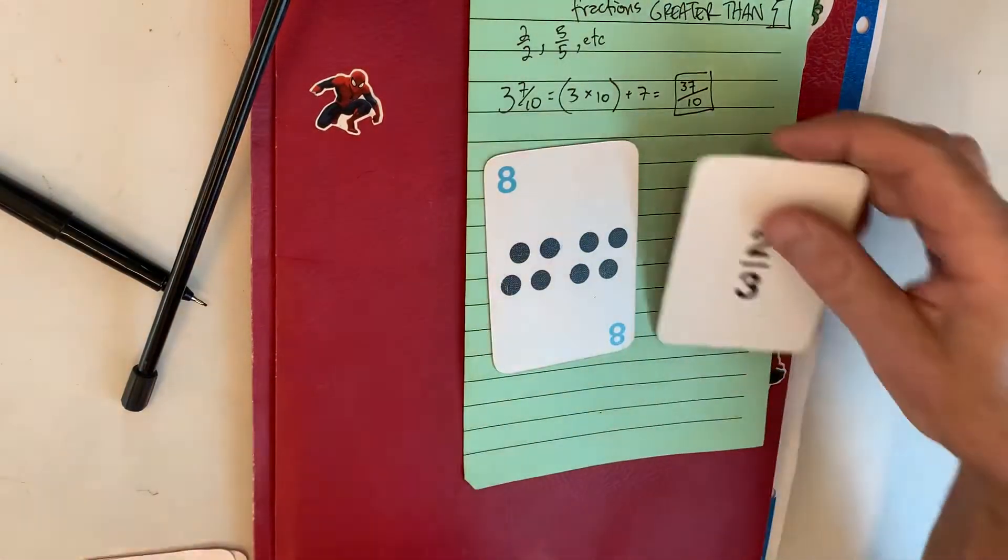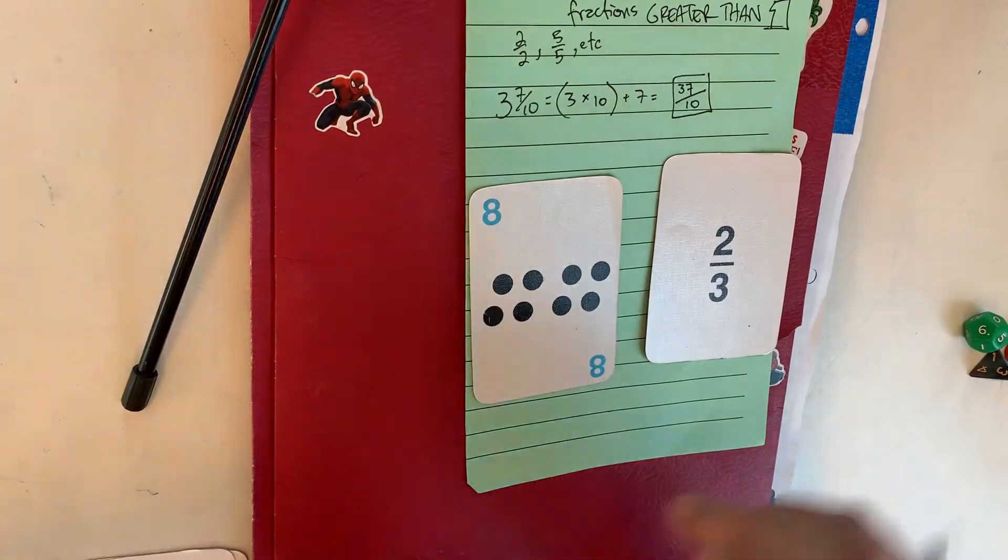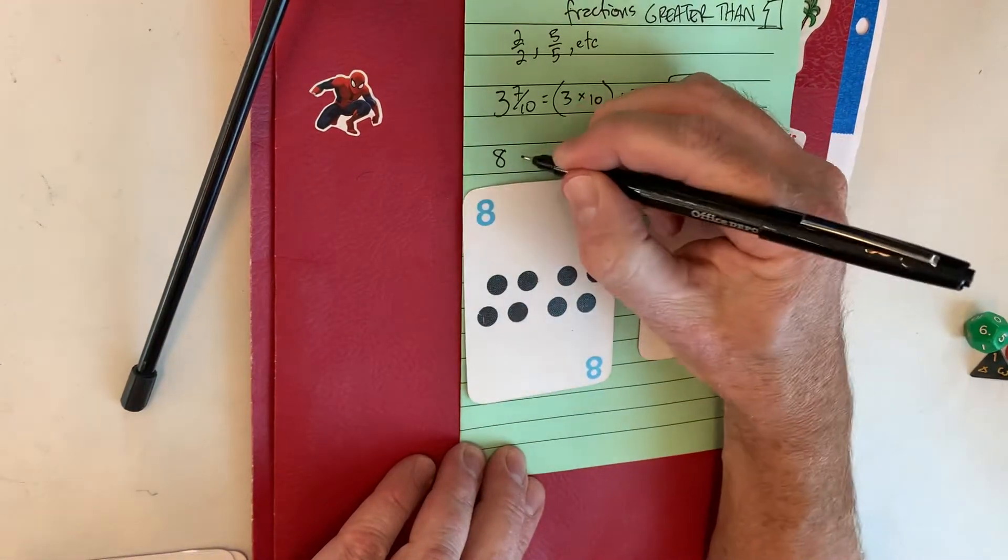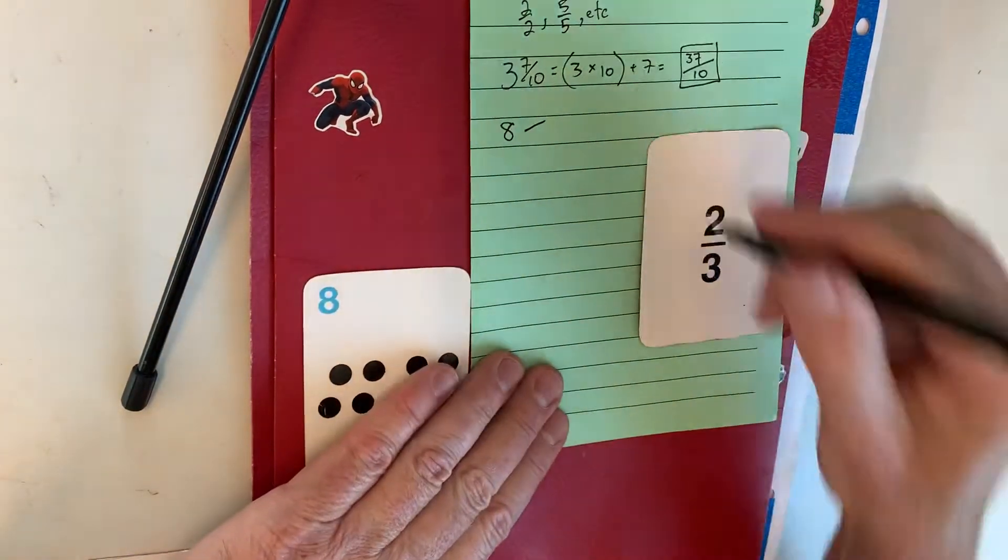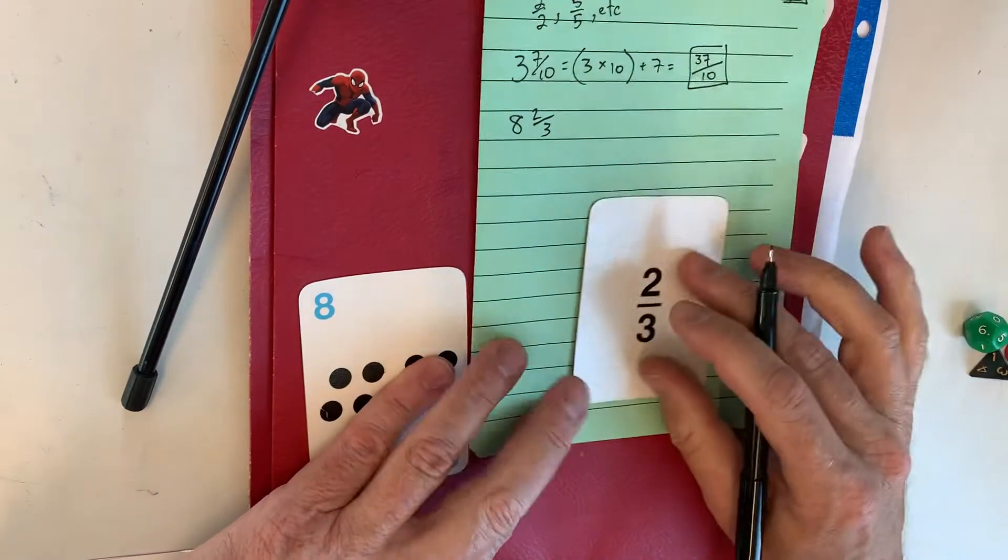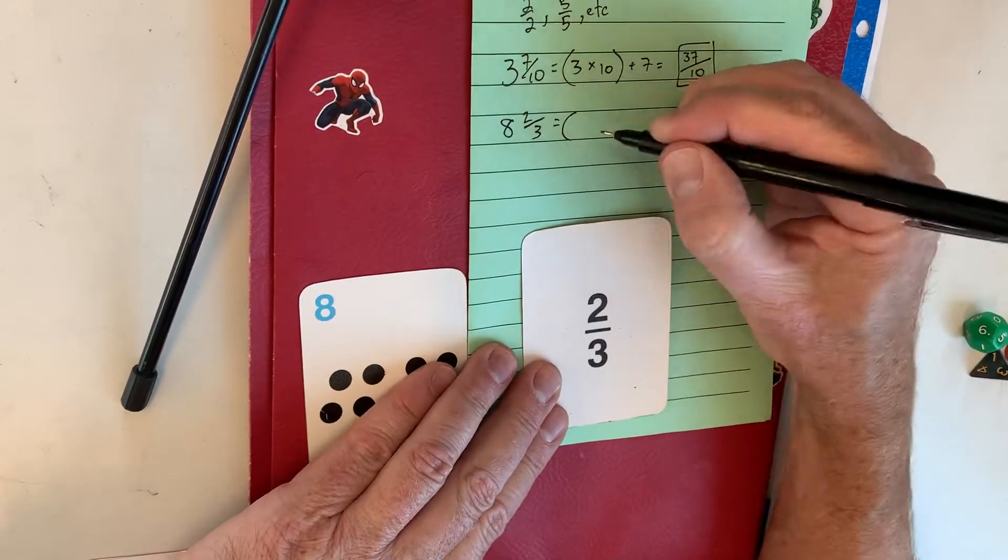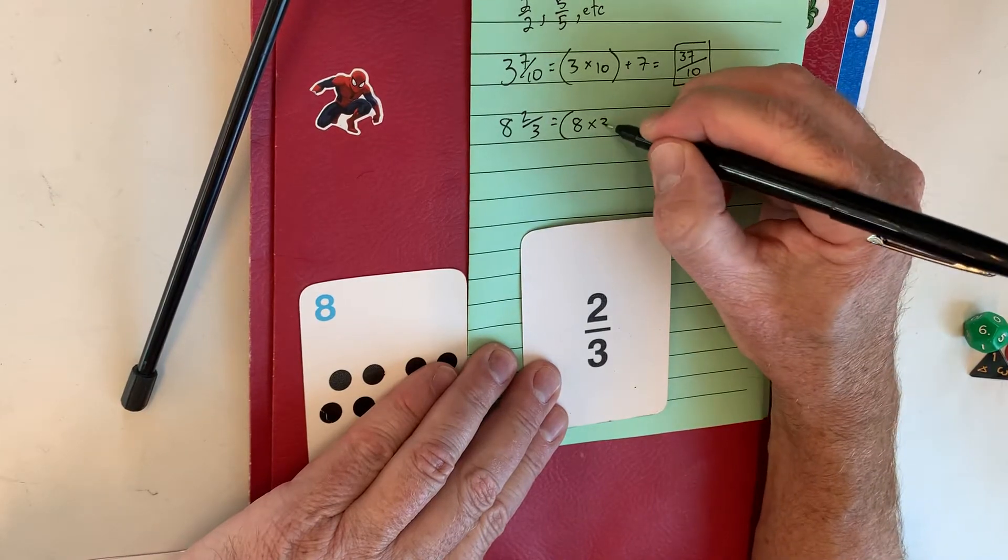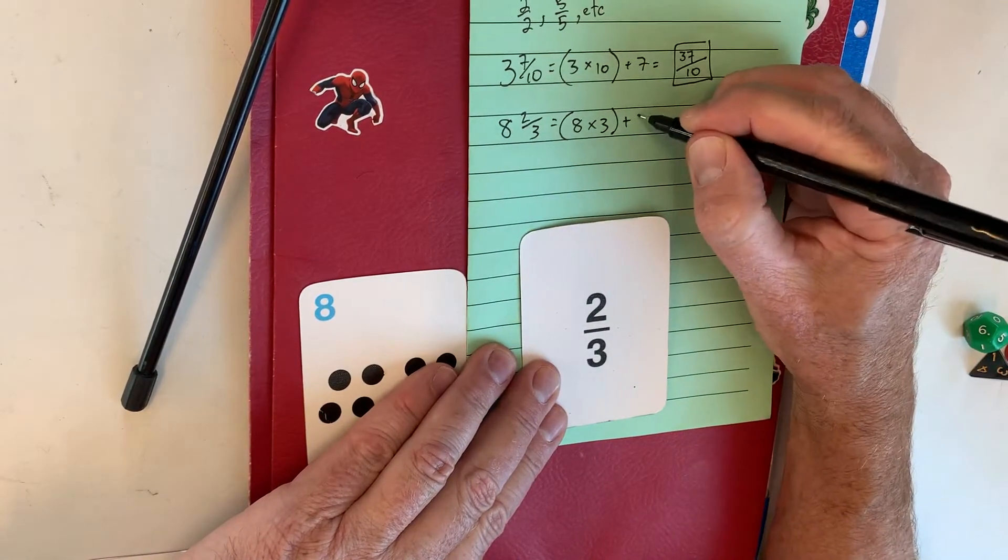Eight and two-thirds. Whole number is eight. I'm going to multiply that by the denominator, thirds, and I'm going to add the numerator after that. Okay? Eight times three, and then add the numerator.